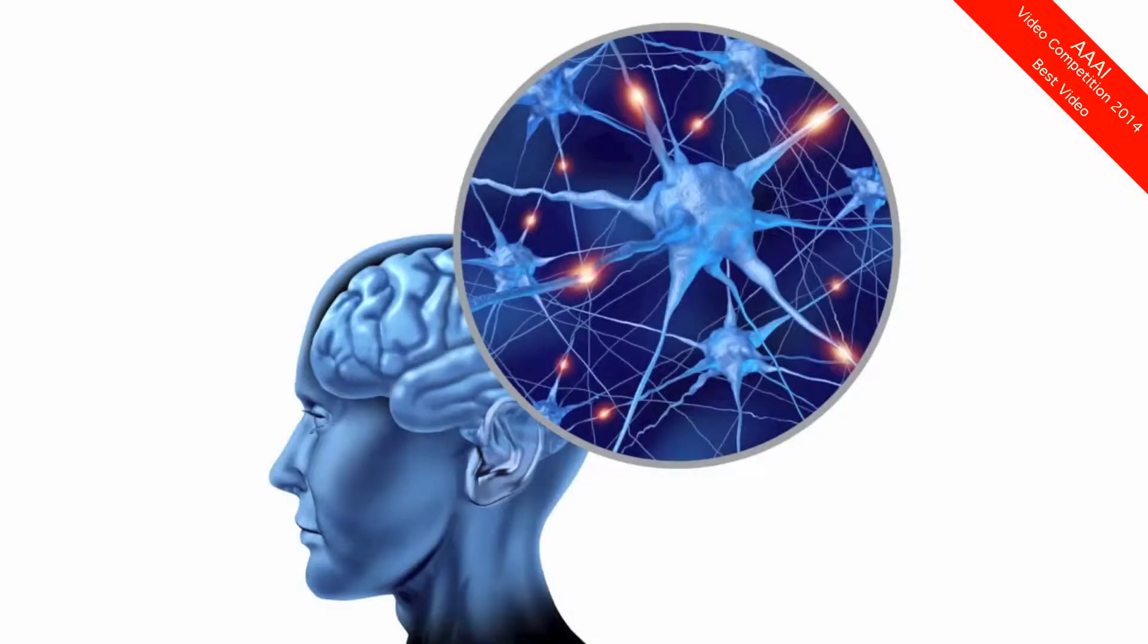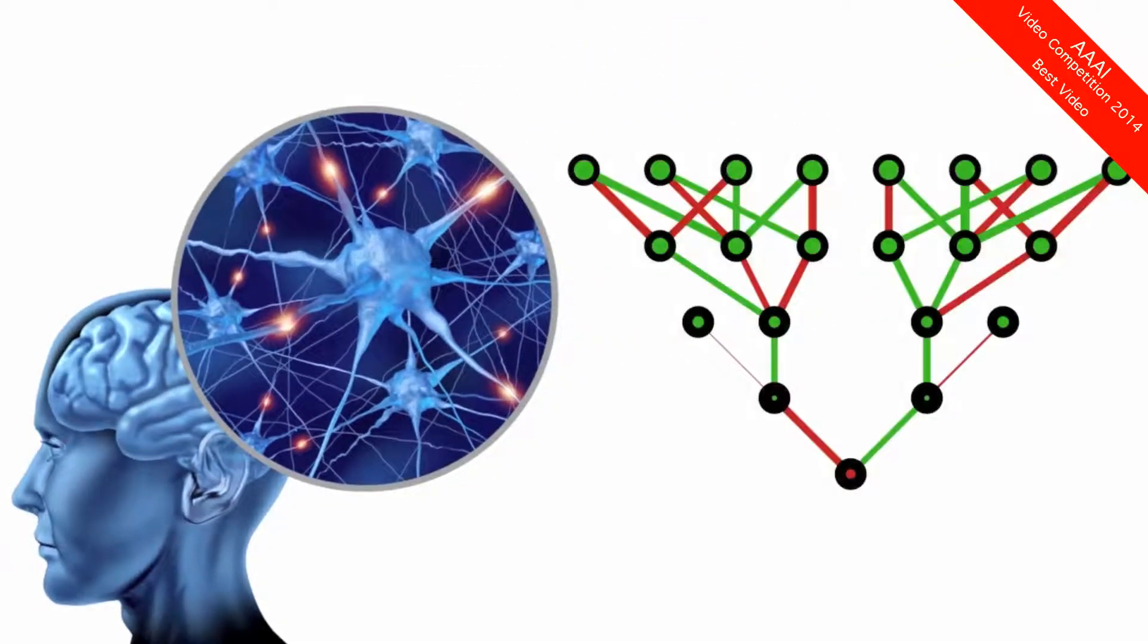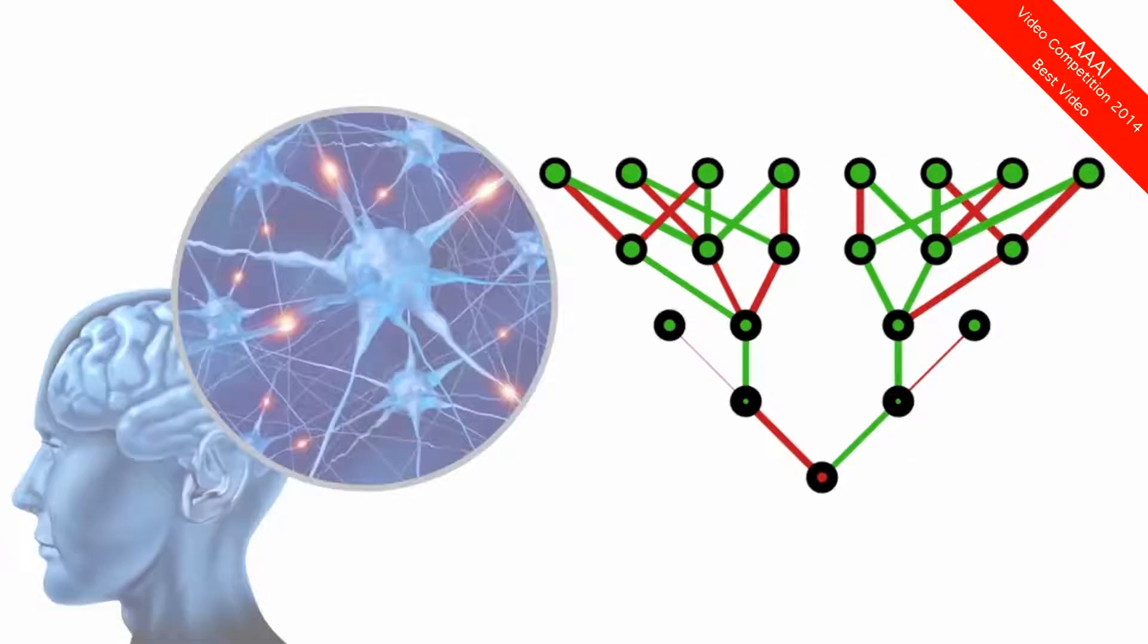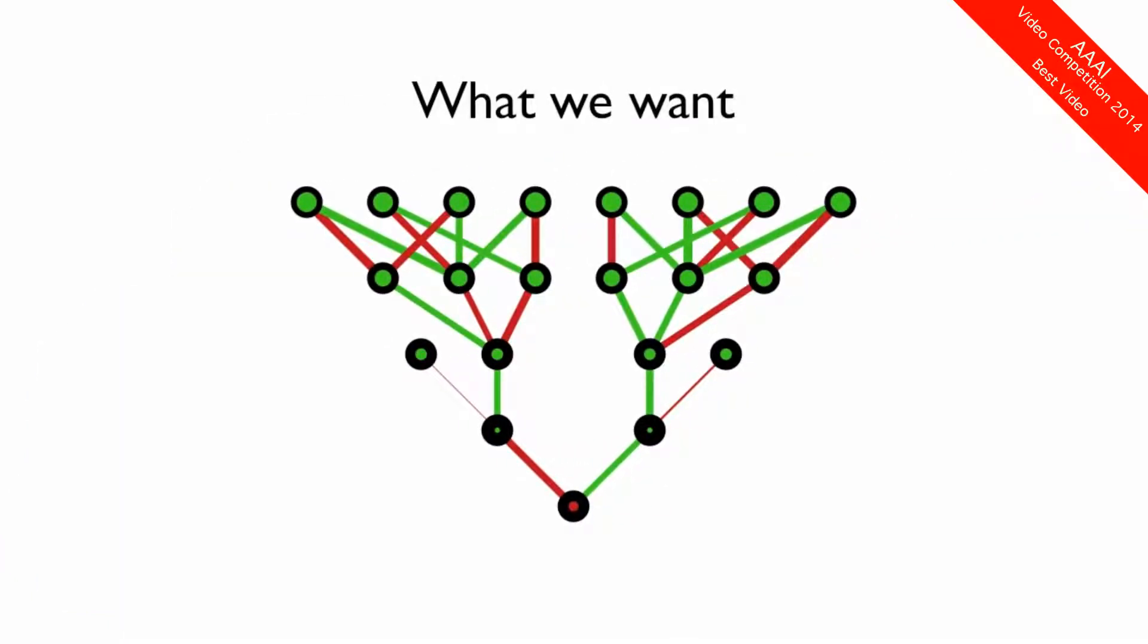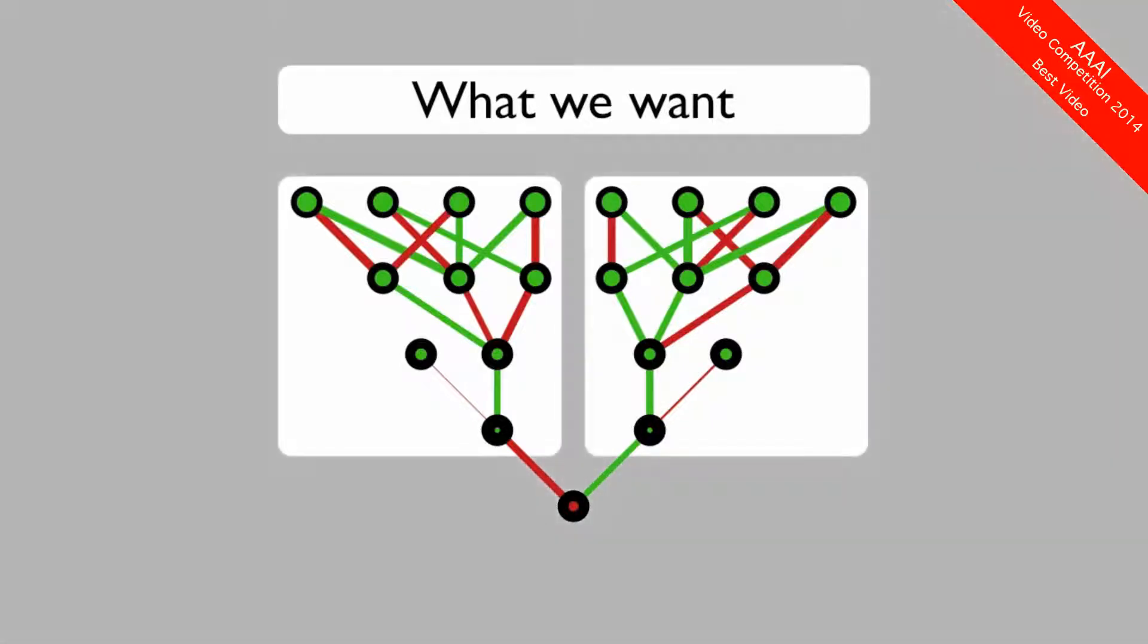The functioning of the brain is largely determined by the properties of its neurons and how those neurons are connected. In our research we evolve artificial neural networks, whose functionality is likewise defined by their nodes, or neurons, and the connections between those neurons. When we evolve artificial neural networks to solve problems that are modular and regular, we want these networks to be modular and regular as well.